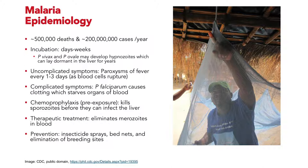Different chemoprophylaxis can be used by travelers to prevent infection by preventing sporozoites from infecting the liver. Once infected, treatments can be used to kill the merozoites, but prevention is always the best medicine. People living in these areas tend to use insecticide sprays, repellents, and especially bed nets and other measures to separate themselves from mosquitoes.